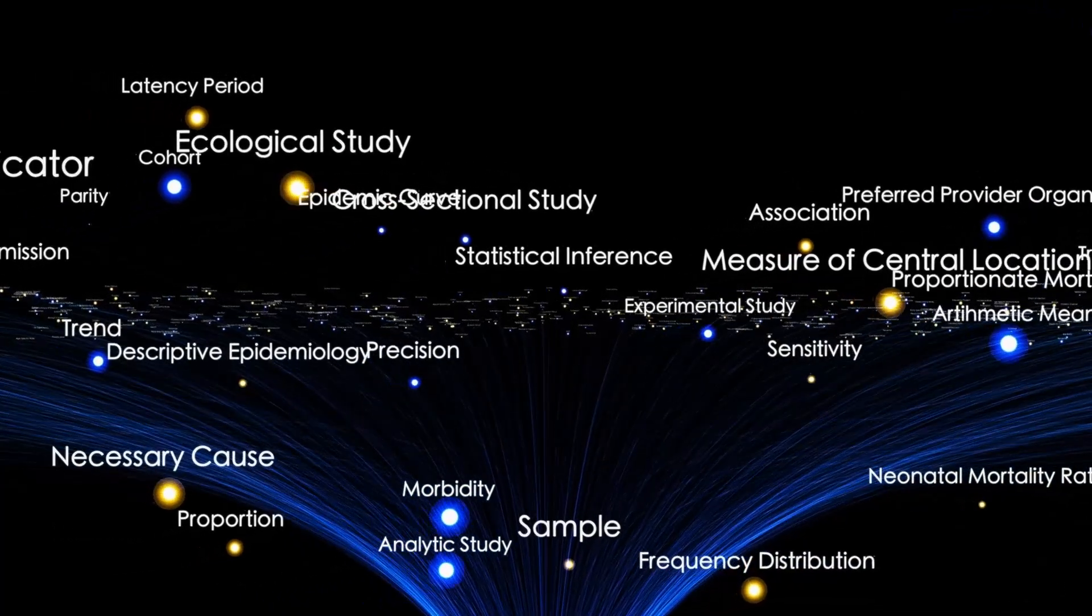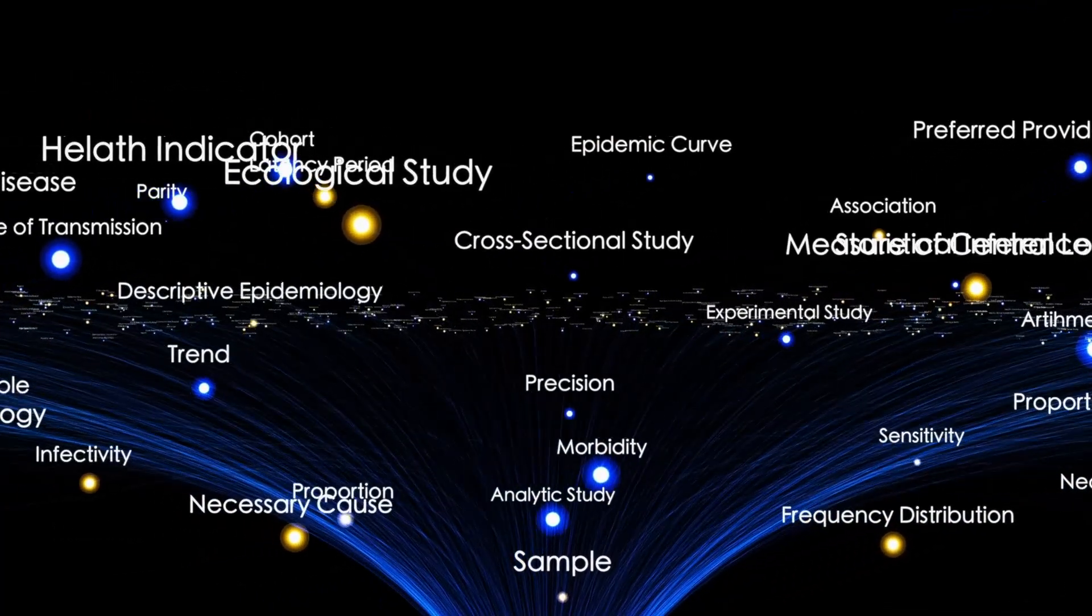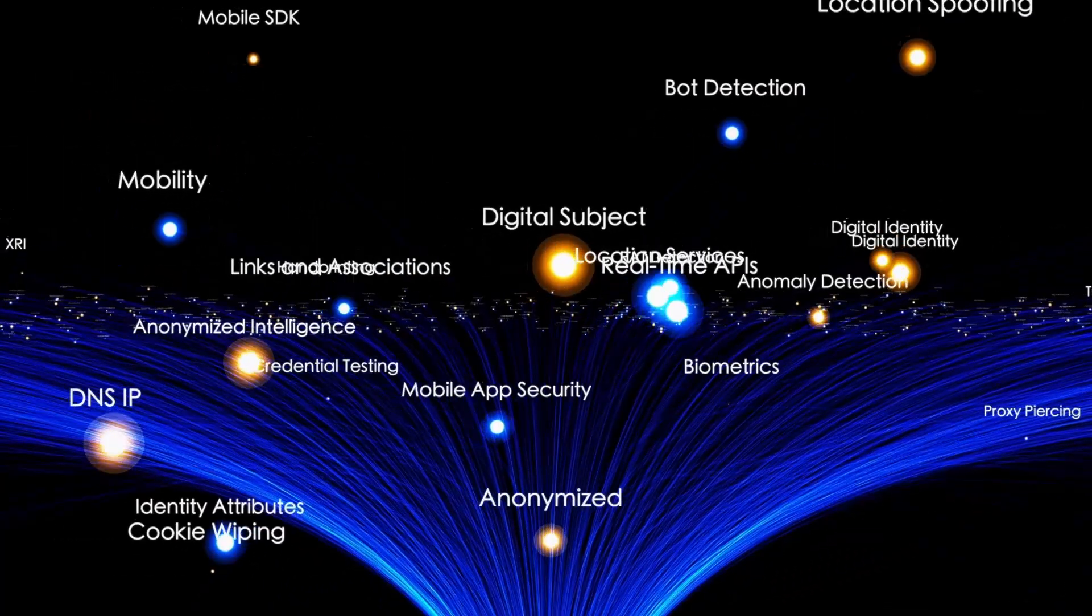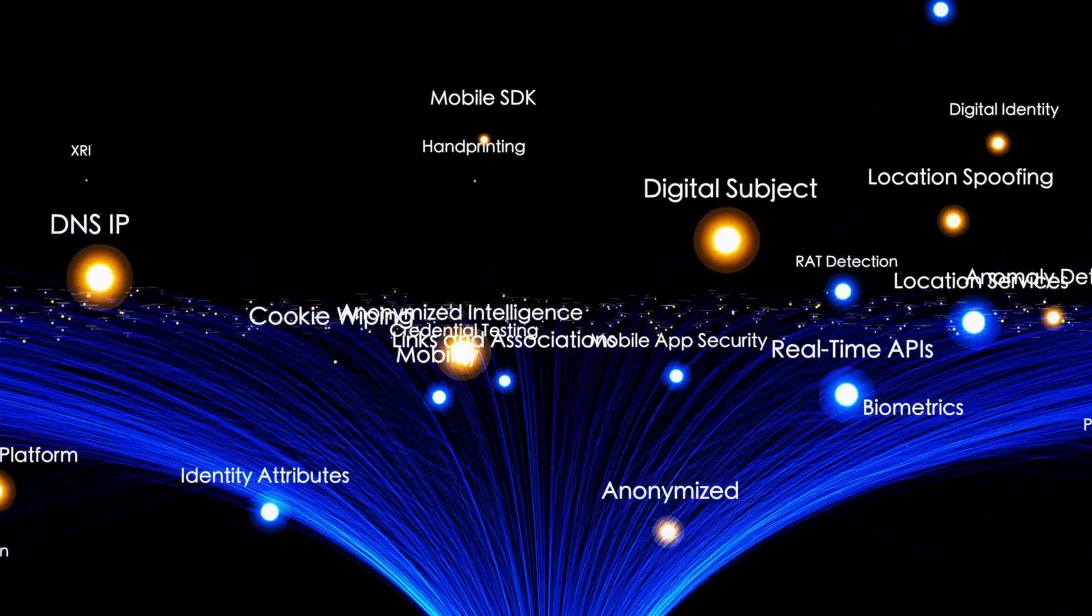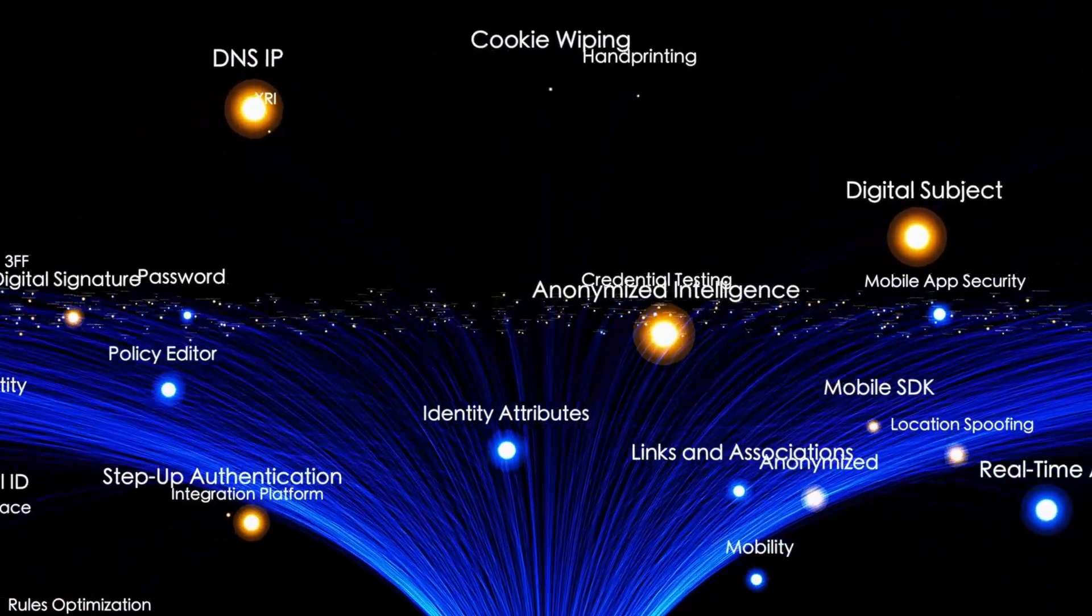Meanwhile, powerful radio telescopes like the Square Kilometre Array (SKA) are scanning the skies for technosignatures—radio signals that could indicate intelligent extraterrestrial civilizations.